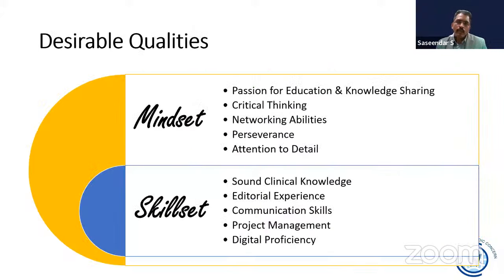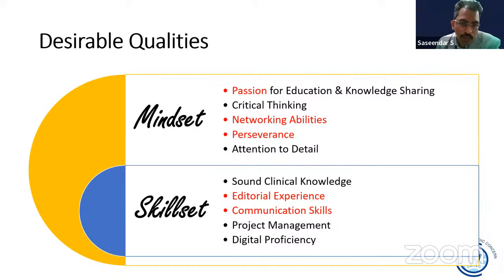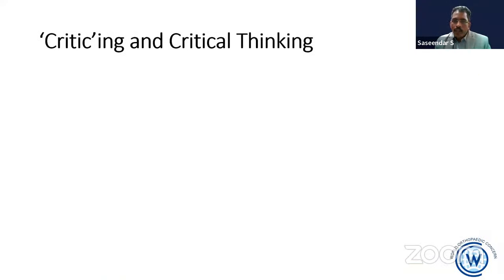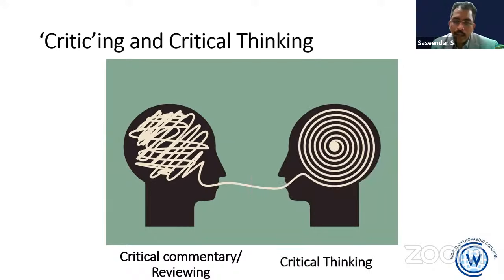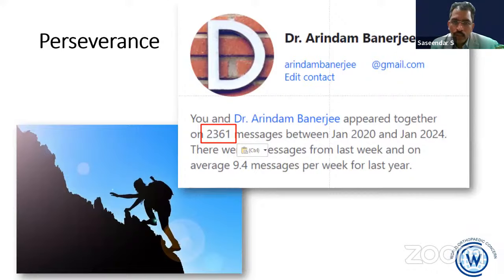As far as essential qualities are concerned, I would like to divide them into mindsets and skill sets. Skillsets are the actual way of writing; mindset, most importantly, includes the passion for education and sharing of knowledge, networking abilities, and — very importantly — perseverance. You should be able to critically review a chapter appropriately, which comes with experience in journal article critiquing.